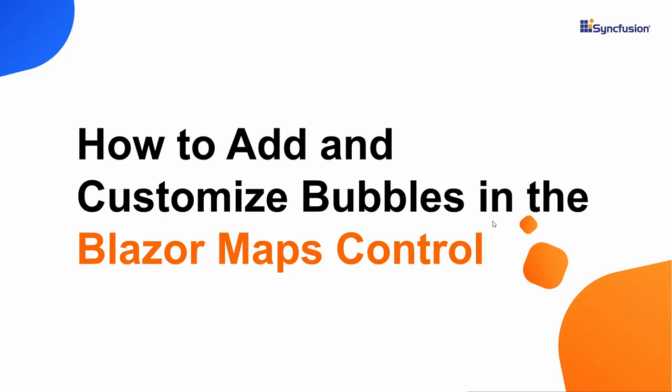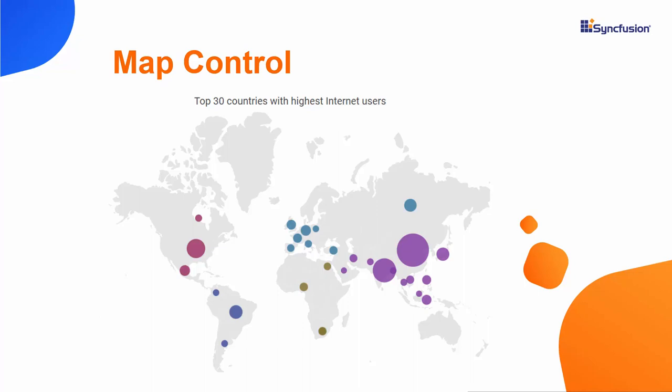Hi everyone, welcome back. In this video, I am going to show you how to add and customize bubbles in the Syncfusion Blazor Maps control. Look at this example, where a world map displays bubbles that give information about the top 30 countries by number of internet users. The bubbles in the map are different colors and have custom bubble sizes set to them. Now, I will show you how to write the code to add and customize bubbles in Blazor Maps.